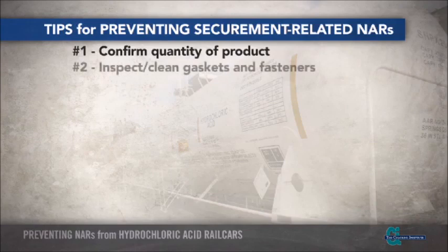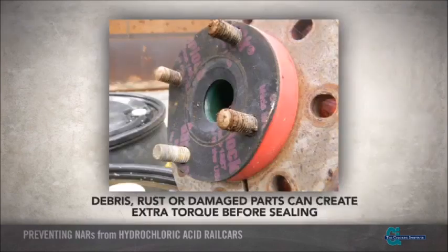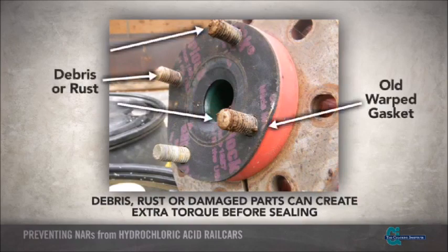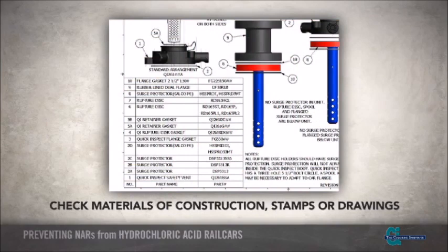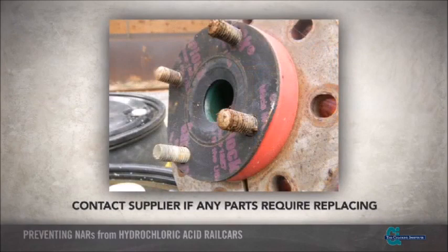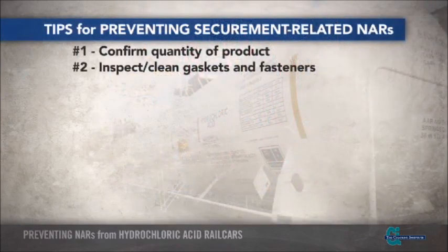The next practice for reducing NARs is to inspect and clean all of the gaskets and fasteners on the fittings, including bolts and washers. Debris, rust, or damaged parts can create extra torque before sealing, which gives the illusion that the fitting is secured tightly. Old or damaged gaskets and fasteners should be replaced with the same kind that was previously installed. Check the materials of construction and manufacturing stamps on items or in tank car drawings to ensure that the same equipment is used as replacements. If preparing a car for return shipment, the supplier should be contacted if any parts require replacing.